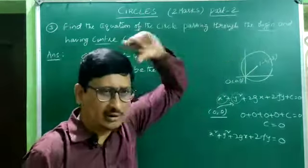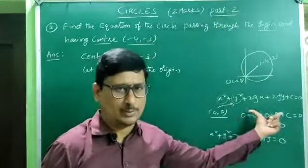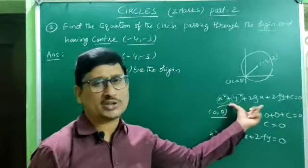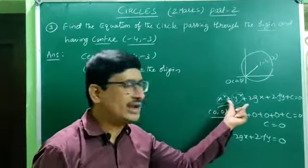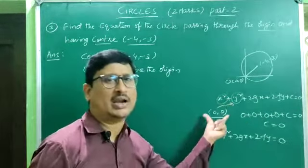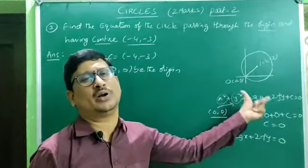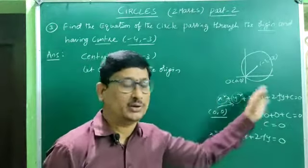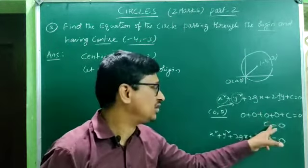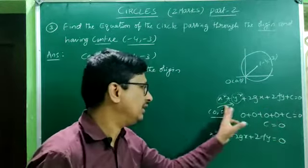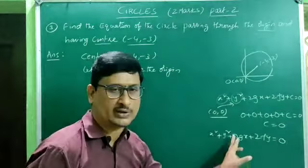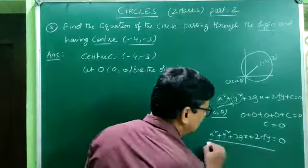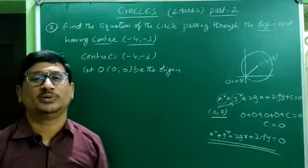When the circle passes through origin, the equation becomes x² + y² + 2gx + 2fy = 0 — there is no constant term. This is the equation of the circle which passes through the origin.